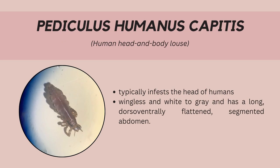The third and last louse is Pediculus humanus capitis. It typically infests the head of humans and is anopluran, thus a sucking louse. The nymphal stage lasts for 16 to 18 days, including 3 molts. The female starts laying eggs 1 to 2 days after maturity. Body lice live from 30 to 40 days and survive best at the body temperature of humans. It is different from Phthirus pubis, as the human crab louse infests the pubic area of humans.